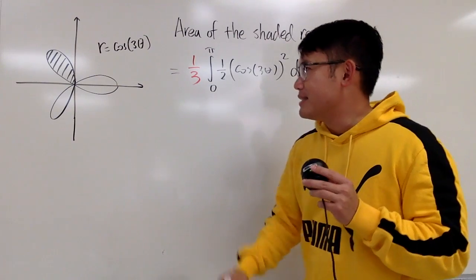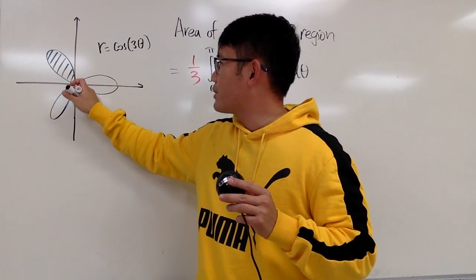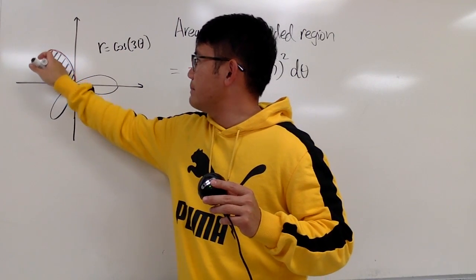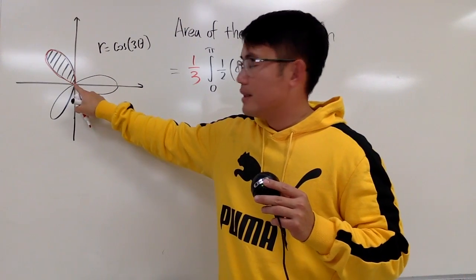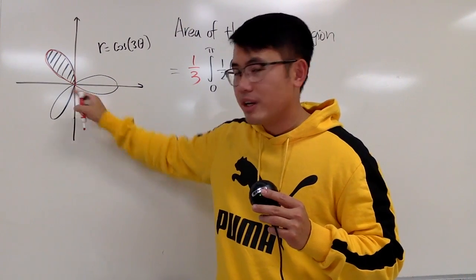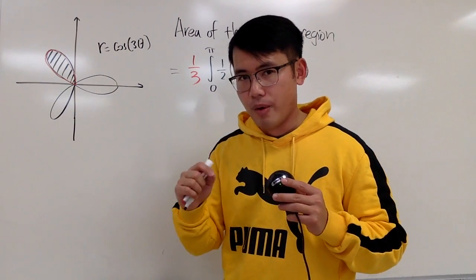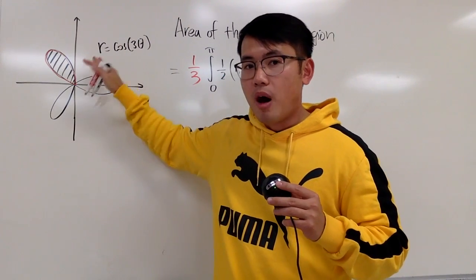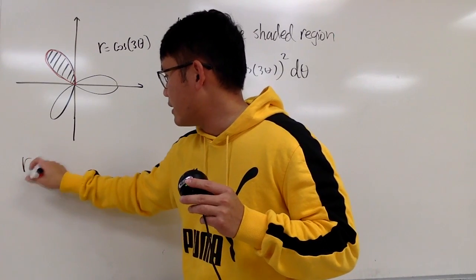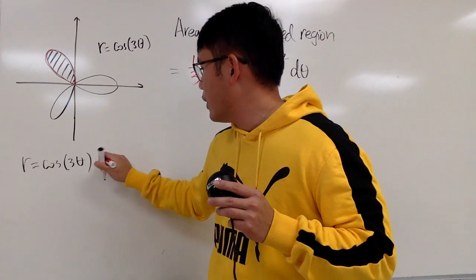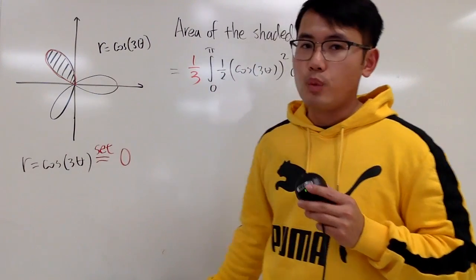However, if you really insist to figure out the theta value here and the theta value here, so you can actually end up this part only, this is how you do it. Notice the graph right here hits the origin, and to do so, we are going to set r to be 0. The origin is where the r is 0. So I will just write this down for you guys. r is cosine of 3 theta. We are going to set this to be 0 because we are back at the origin.